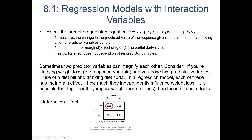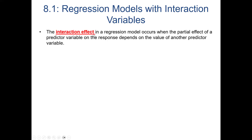Looking at weight loss after one week, whether they drink diet sodas (yes or no) and whether they take a diet pill (yes or no), it's possible that the effect of drinking diet soda is greater when the pill is also taken, and vice versa. The interaction effect in a regression model occurs when the partial effect of a predictor variable on the response depends on the value of another predictor variable.